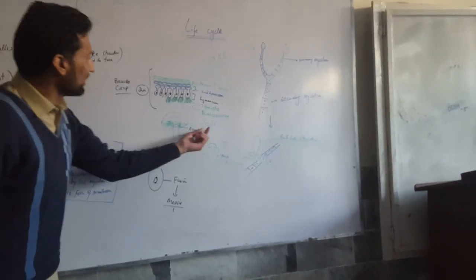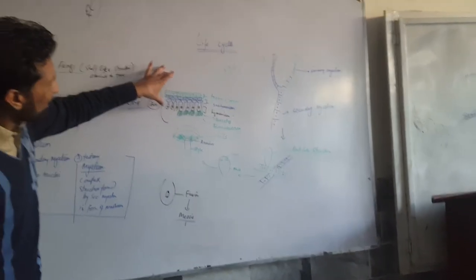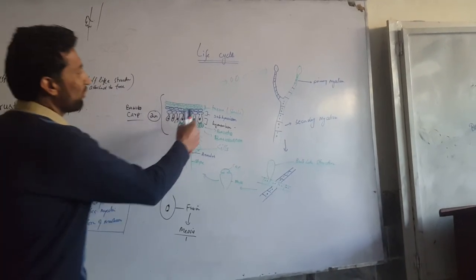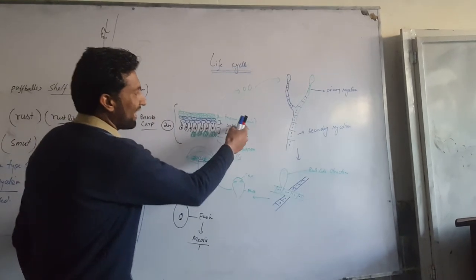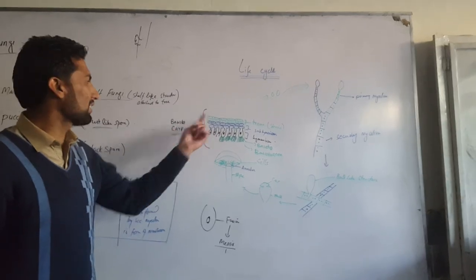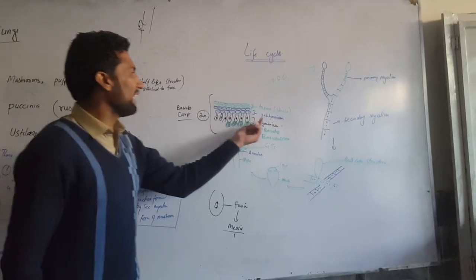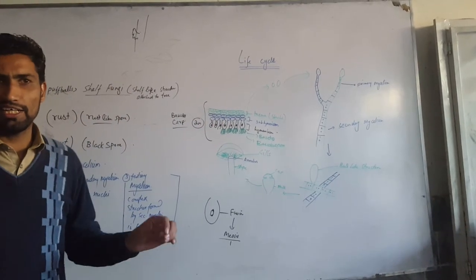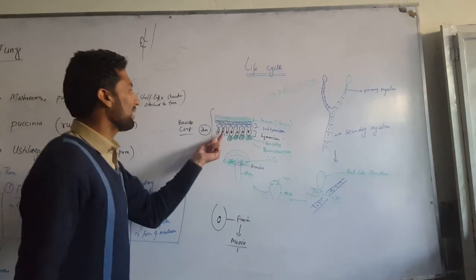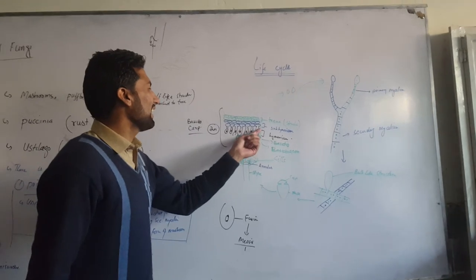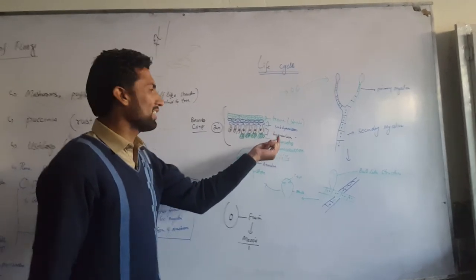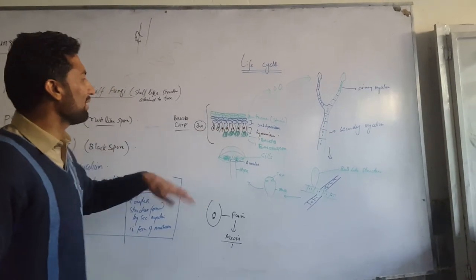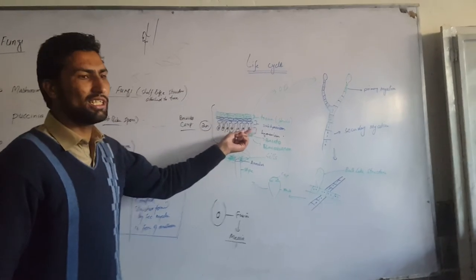Each gill is composed of three layers of cells. The first layer is the primordium, which is sterile and is composed of elongated, binucleated cells. The second layer is the sub-hymenium layer, which is composed of cells that are slightly round in shape. From the sub-hymenium layer, a bulb-like structure arises known as the hymenium layer.